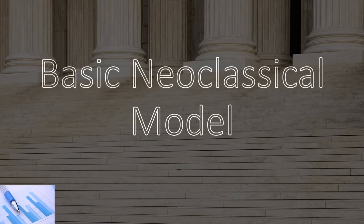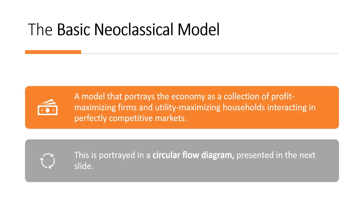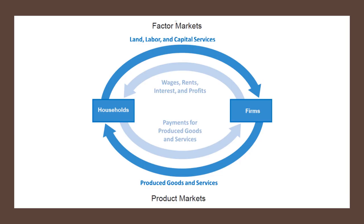One popular economic model is the basic neoclassical model. It portrays the economy as a collection of profit-maximizing firms and utility-maximizing households interacting in perfectly competitive markets, represented in a circular flow diagram. The neoclassical model assumes that people act rationally to maximize their own satisfaction or profits. Households make decisions based on rational choices to maximize their utility — satisfaction — given their constraints such as income and prices. Firms aim to maximize profits by choosing the optimal combination of inputs such as labor and capital to produce goods and services.